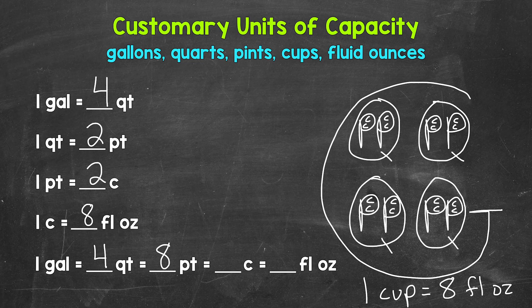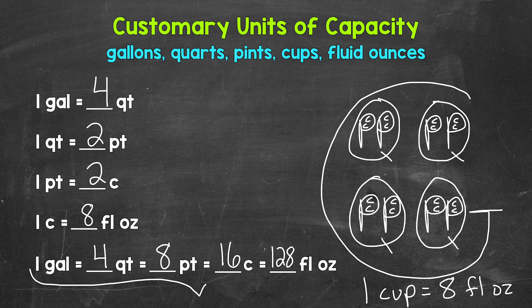And then one gallon equals 16 cups. And then one gallon equals 128 fluid ounces. So all of these are equal and they all equal one gallon.